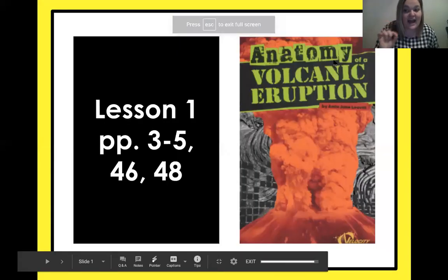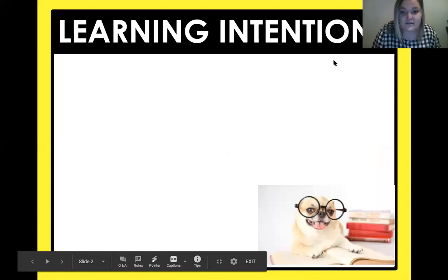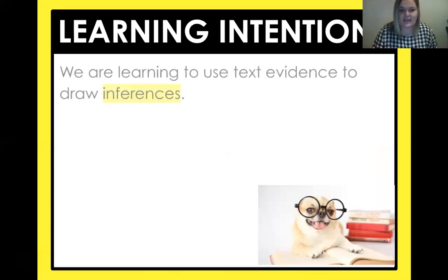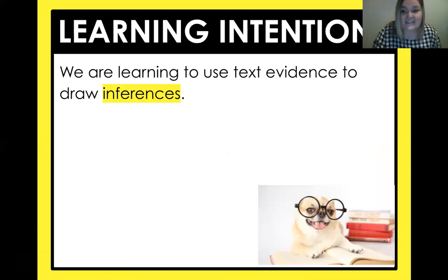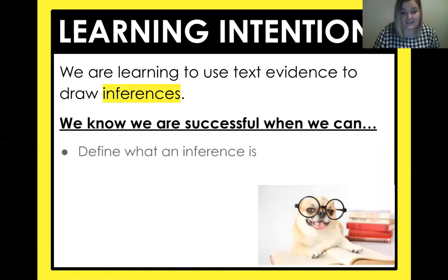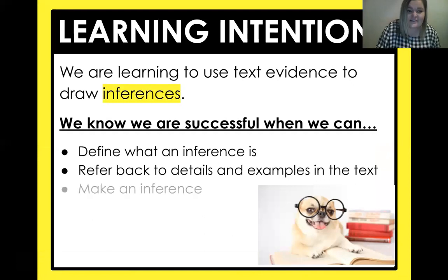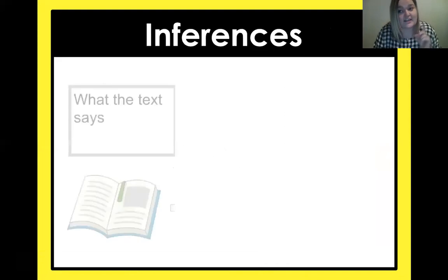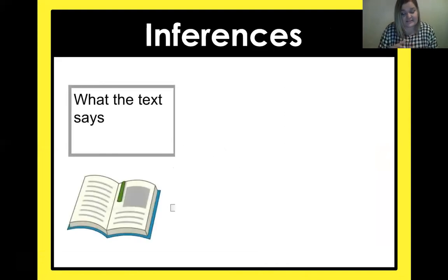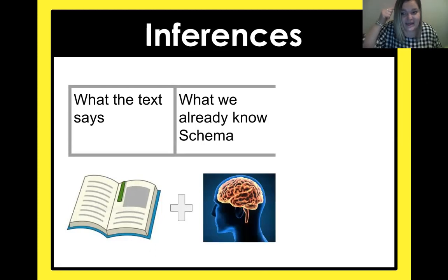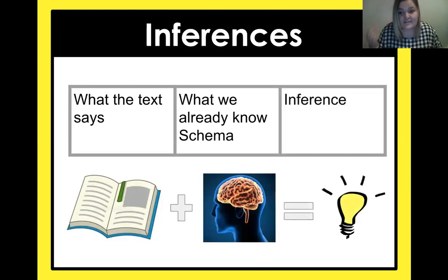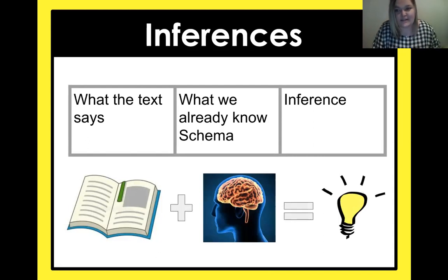So today, like I already said, we're starting with anatomy of a volcanic eruption. First things first — what are we learning about today? We are learning to use text evidence to draw inferences, or to make an inference. We know we are successful today when we can define what an inference is. We have to refer back to details in the text and make an inference. An inference starts with what the text says — you go into the story and pick out details, then you add what you already know, and then you make an inference. It's not something you find directly in the text; it is a connection or idea that is yours, but it ties back to what the text says.